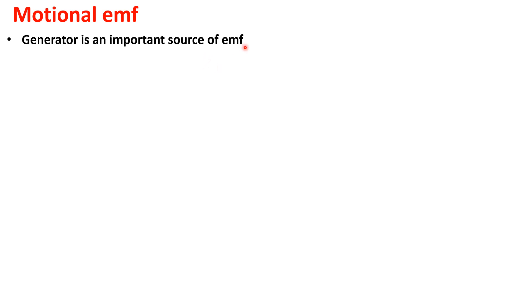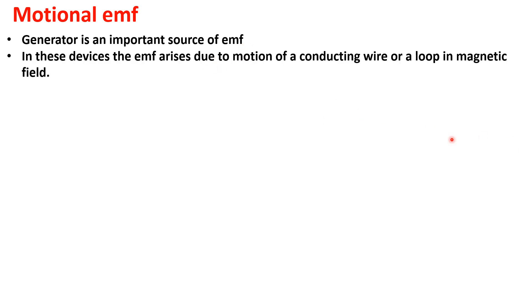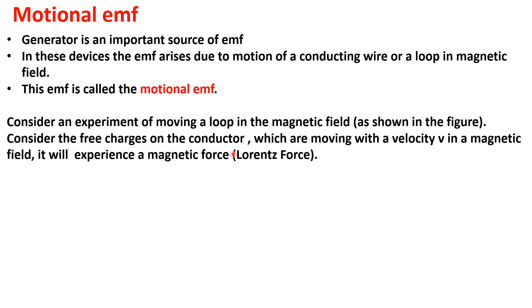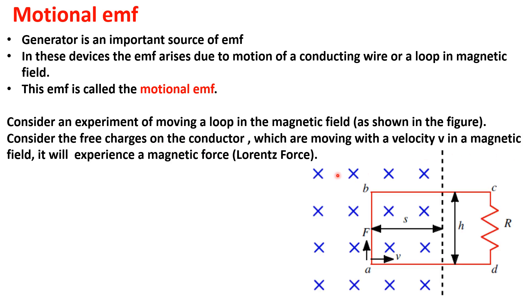We will now see how we can find out the EMF due to motion, known as the motional EMF. This is used in the generation of EMF in a generator. In these devices, the EMF arises due to the motion of a conducting wire or loop in a magnetic field. Consider an experiment where we have a moving loop with corners a, b, c, d, placed in a magnetic field.